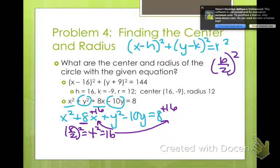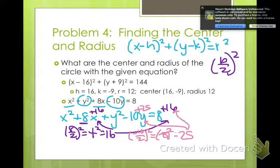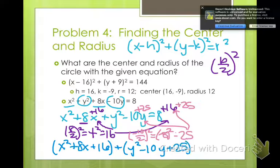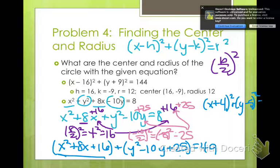We need to do the same thing with our y values. I'm going to do (-10/2)², which is (-5)², which is 25. So I'm going to add 25 here and add 25 here. Now when I rewrite these, I have x² + 8x + 16 + y² - 10y + 25 = 8 + 16 + 25 = 49. Now I can factor this. What multiplies to be 16 and adds to be 8? 4 and 4. So that's (x + 4)². What multiplies to be 25 and adds to be -10? That's (y - 5)², and that equals 49.